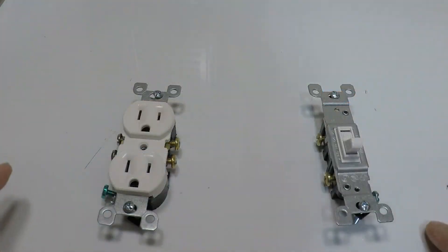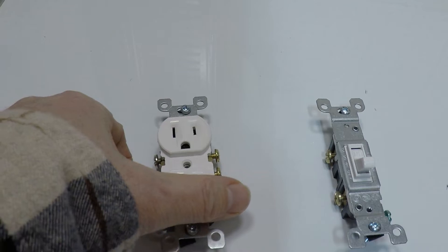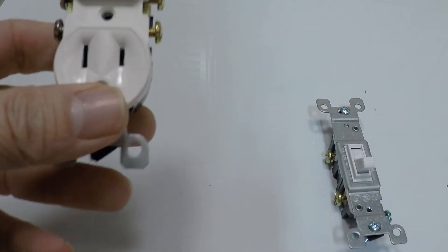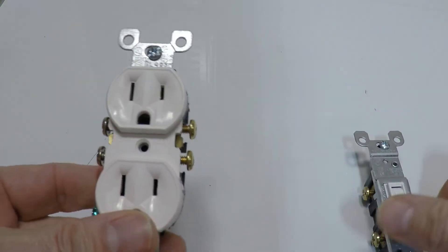All right, here we are on the dry erase board, which I've somehow destroyed with who knows what, but anyway I only used it about three times before I wrecked it. We've got a light switch here and here's the outlet, okay?